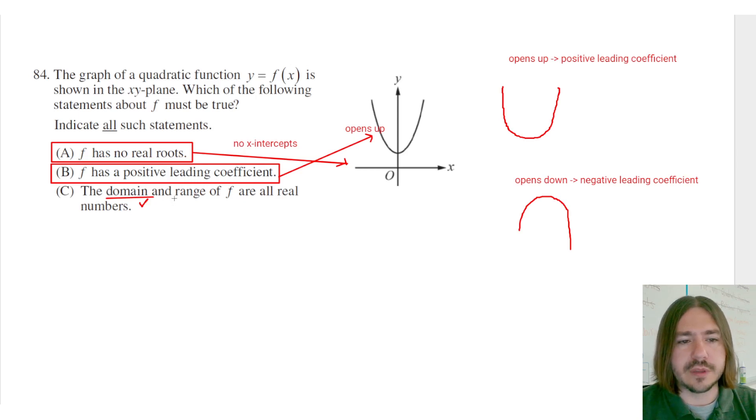So the range, though, the range is not all real numbers. The range is the Y values, and we can see that there's no coordinates down here. So there is a minimum value. So there are some Y values that are not defined for this function. The range is not all real numbers. It's going to be something like Y is greater than or equal to whatever number this is.